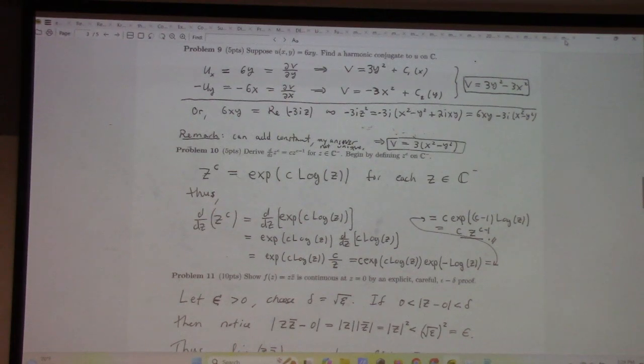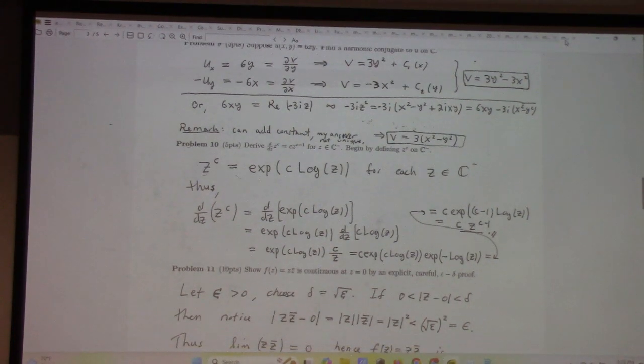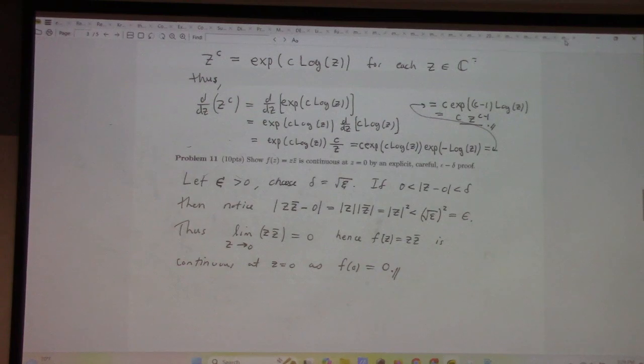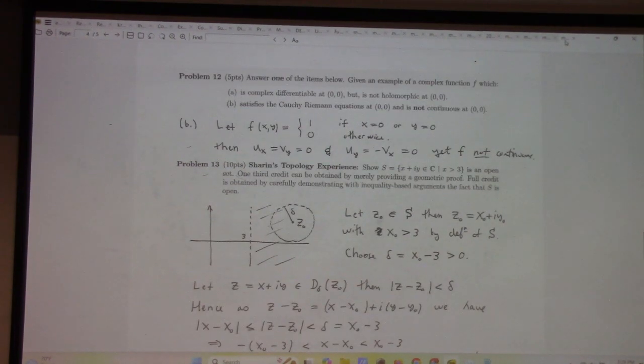As I said, begin by defining z to the power c on the slit complex plane. Show that zz bar is continuous by an explicit, careful epsilon-delta proof. This is not on your test. I have not emphasized that this semester. So, there you go. Tell the engineers. Spread the word. Answer one of the items below.